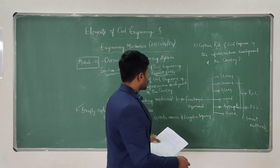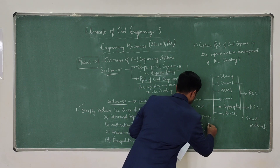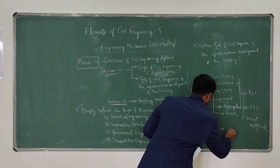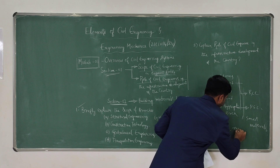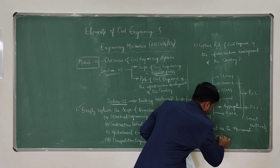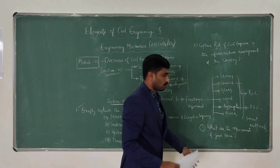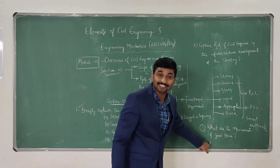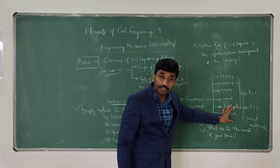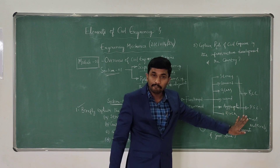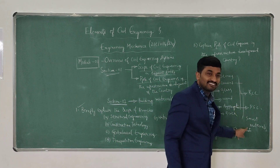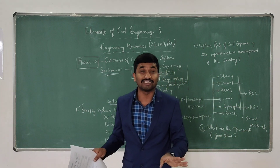You may expect a question like 'What are the requirements of good stone for construction activity?', 'What are the requirements of good cement?', 'What are the requirements of good wood?', or 'What are the requirements of good brick?' It is a simple question for 5 marks. You may also expect RCC, PSC, and Smart Materials — these 3 are very, very important civil engineering keywords.